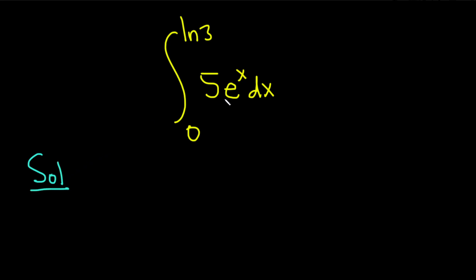So first note that the integral of e to the x is e to the x. So because we have a 5 here, it's just going to hang out. So we have 0 to ln 3, 5 e to the x dx. And so when we integrate, we just get 5 e to the x.